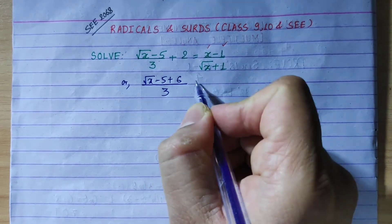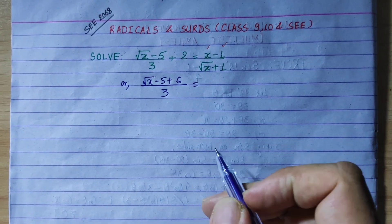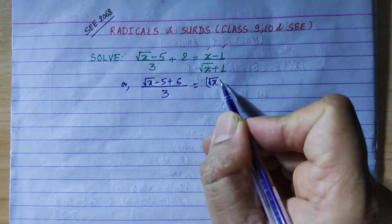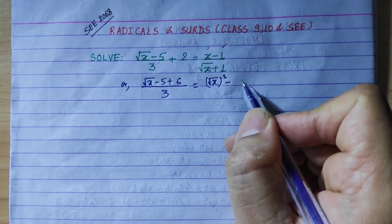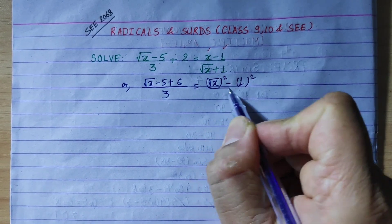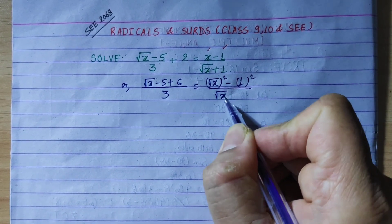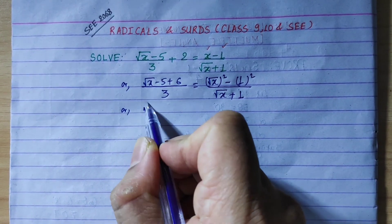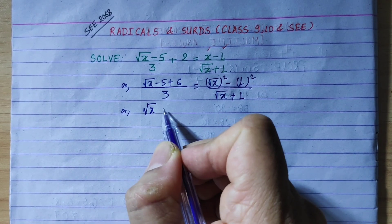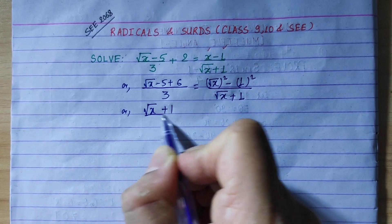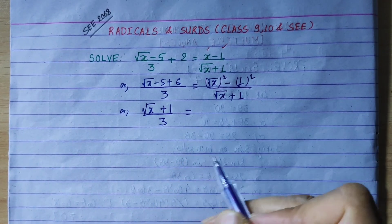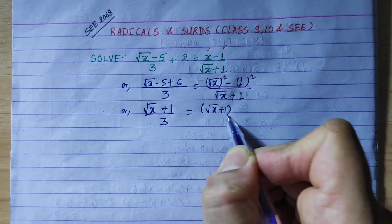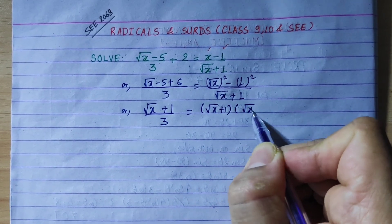We see that x squared minus 1 can be written as root x squared. So root x plus 1 becomes our factor. Simplifying: root x minus 5 divided by 3 plus 1 — applying the a² minus b² formula — gives us (root x plus 1)(root x minus 1).